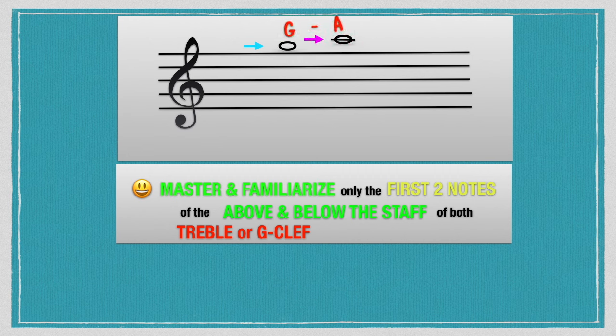The notes above the treble clef staff are G, A, B, C, D, E, F, and G. Just remember G and A, which are the first two notes above the treble clef staff. For the notes below the treble clef staff — D, C, B, A, G, F, and E — just remember D and C.